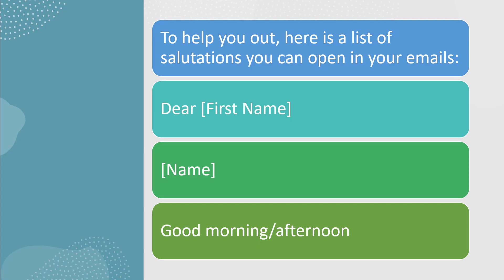If you are sending an email to someone you know or work in a casual environment, then it is perfectly fine to go with 'Hi' and the name of the person, or 'Hello' and the name of the person. To help you out, here is a list of salutations you can use: 'Dear' and the first name or full name, 'Good morning,' 'Good afternoon.'